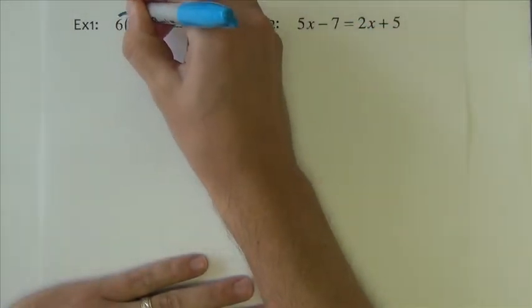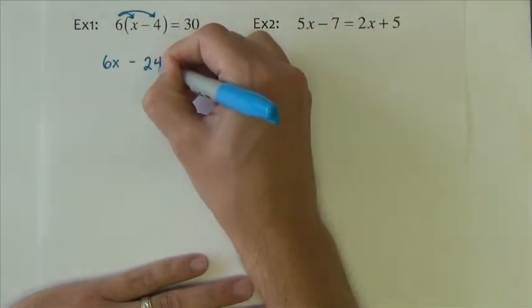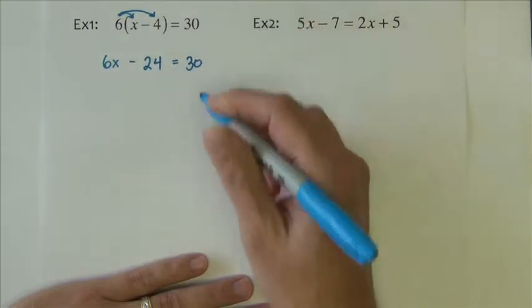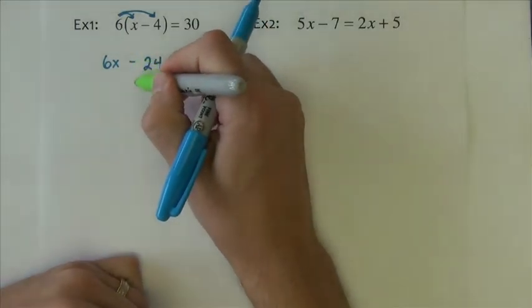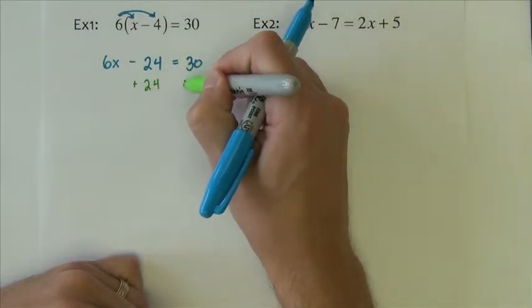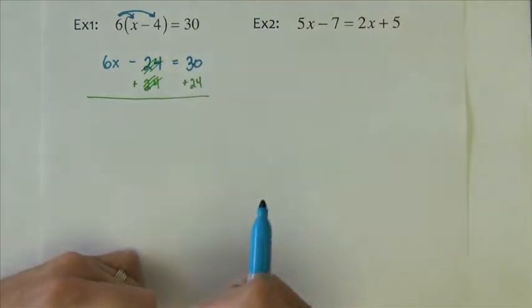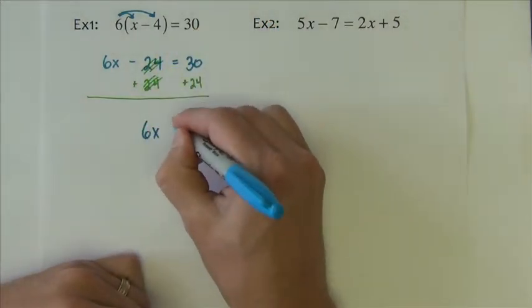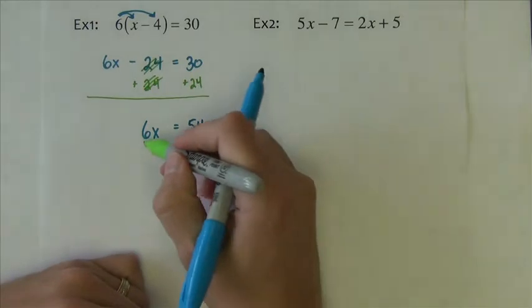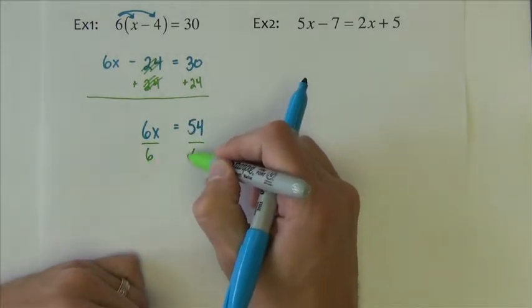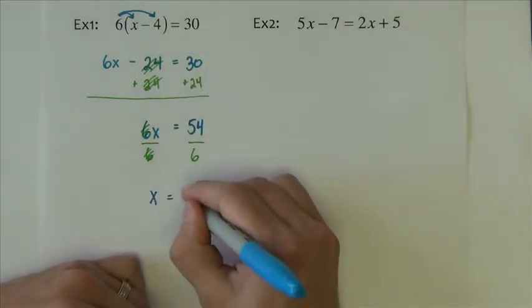We're going to take the 6 and distribute it inside the parentheses. So we'll have 6x minus 24 equals 30. Now I'll go ahead and write out a lot of the steps here on these first couple problems. The minus 24 I'm going to move to the opposite side by adding 24 to both sides. So that gives me 6x equals 54. I'm going to divide both sides by 6, which leaves me with x equals 9.